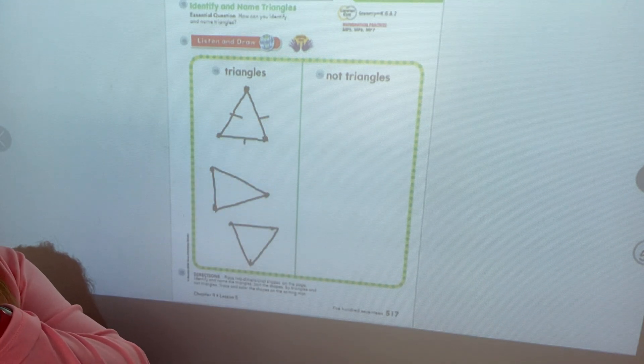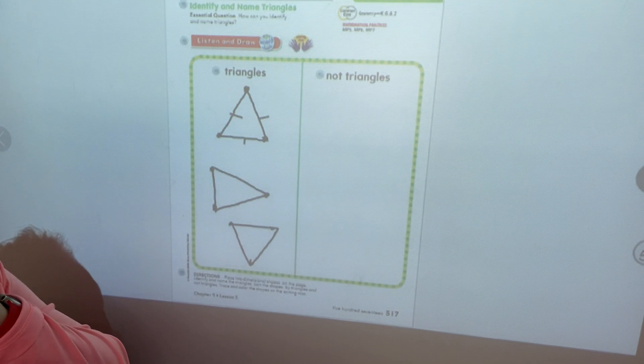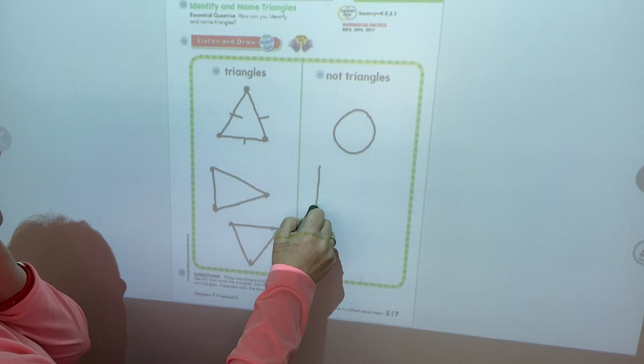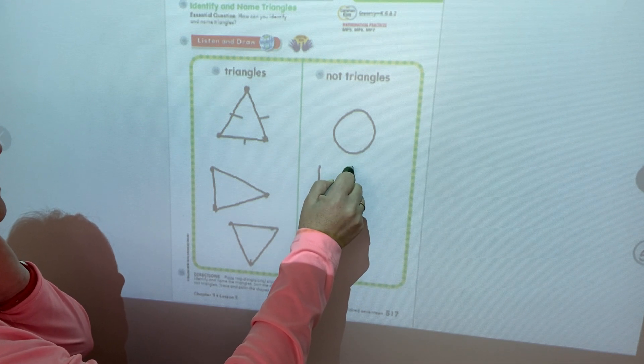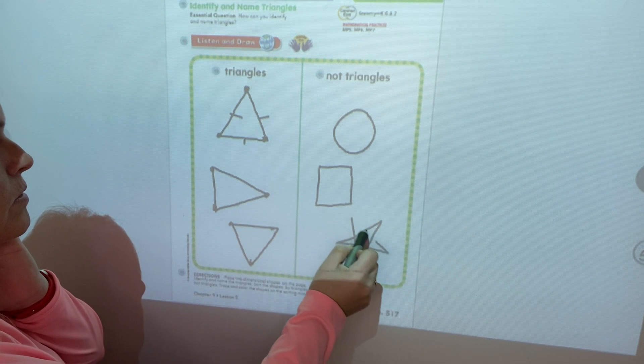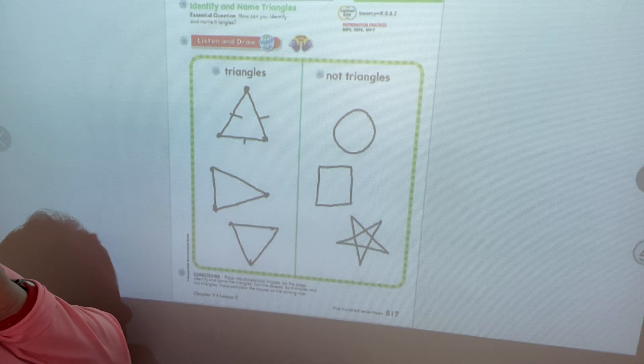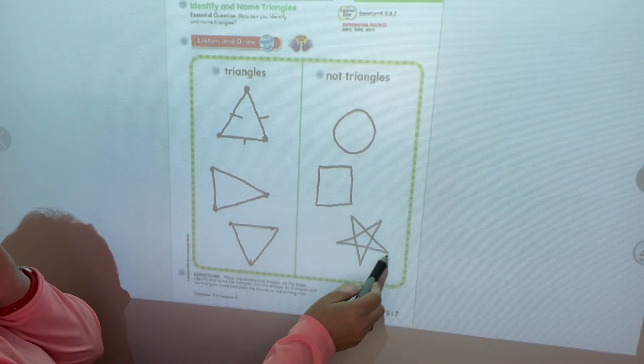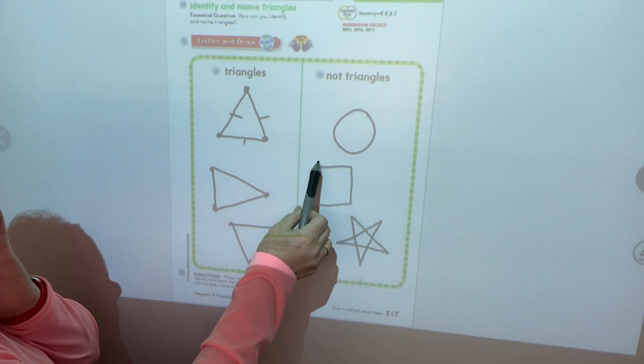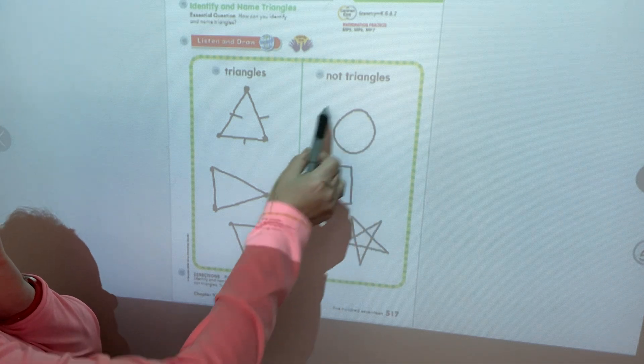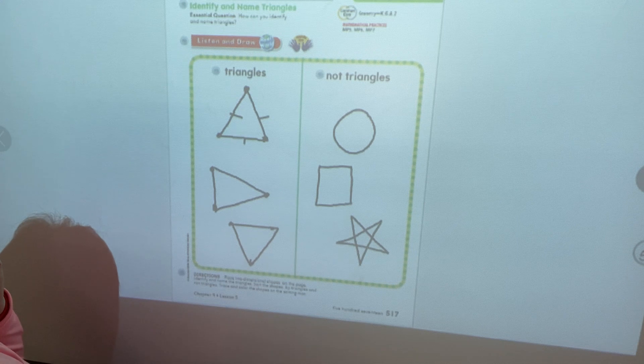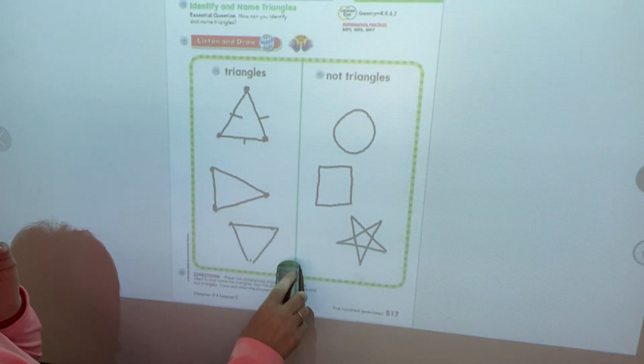On this side we're going to draw some shapes that are not triangles. That could be this shape which is a circle. It could be this shape which is a star. A star has five vertices and it has a lot of sides on there. It's a tricky one. A square we know has four vertices and four sides and a circle we know has no corners and no sides, only curves. Excellent. Let's move on to the next page.